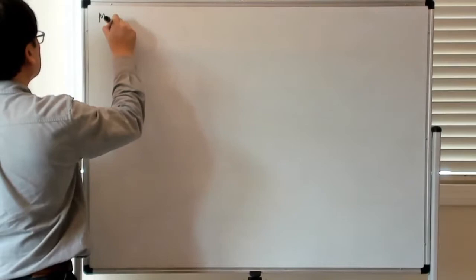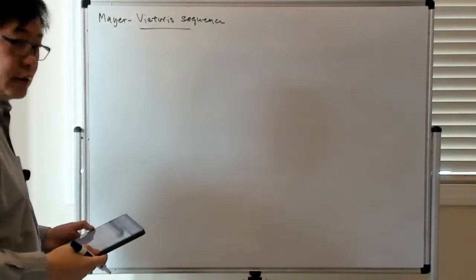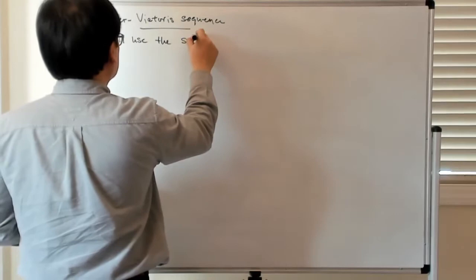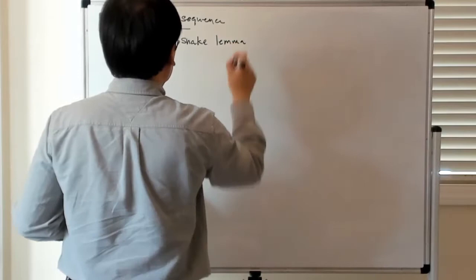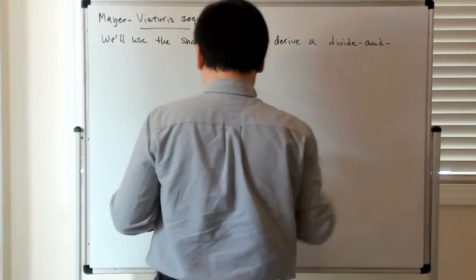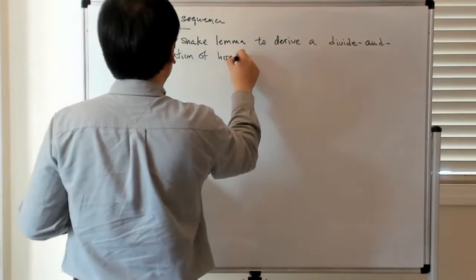All right, so now we're going to talk about the Mayer-Vietoris sequence. And it's going to be basically a consequence of the snake lemma. So we'll use the snake lemma to derive a divide and conquer formulation of homology.